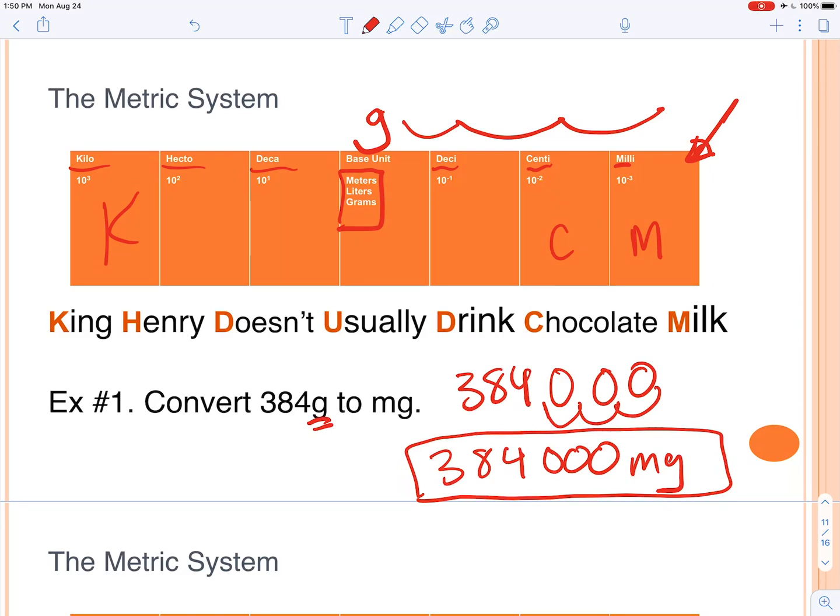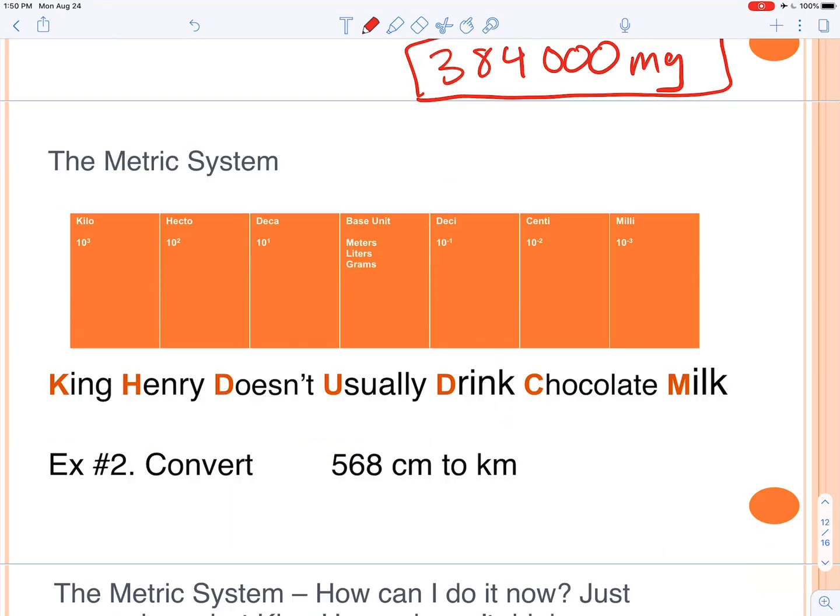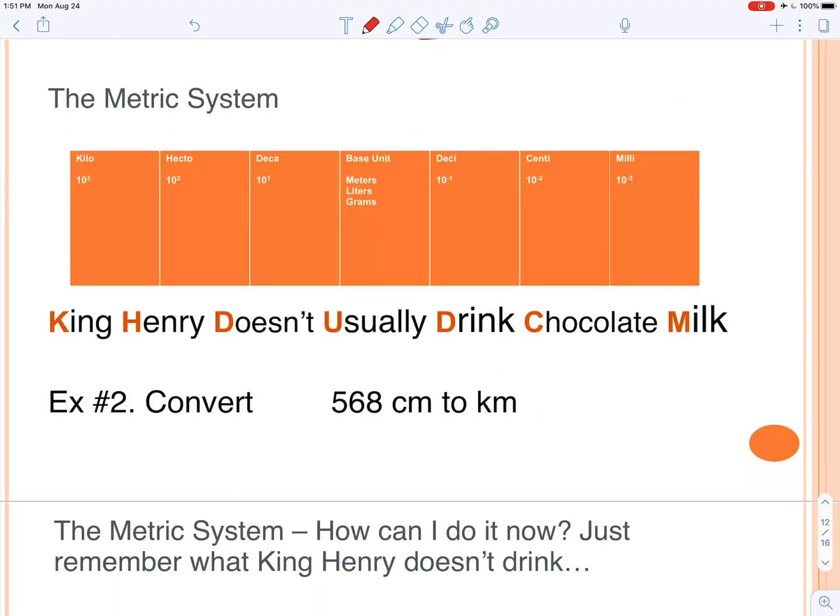So what is this King Henry doesn't usually drink chocolate milk business? Well, you can use this to help you remember this metric system. So K for kilo, H for hecto, D for deca, U—this is our base unit, D for drink chocolate milk, deci, C for centimeters, and M for milk or millimeters. So if you can remember that, then you don't need this table. And so I highly suggest that you remember these seven letters, or you can just remember King Henry doesn't usually drink chocolate milk.